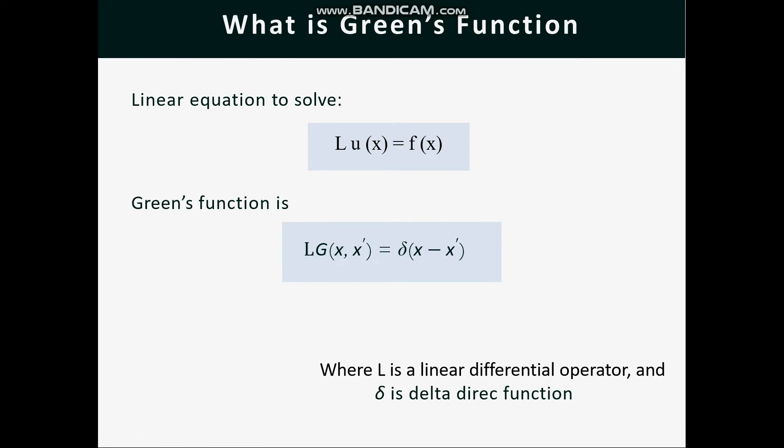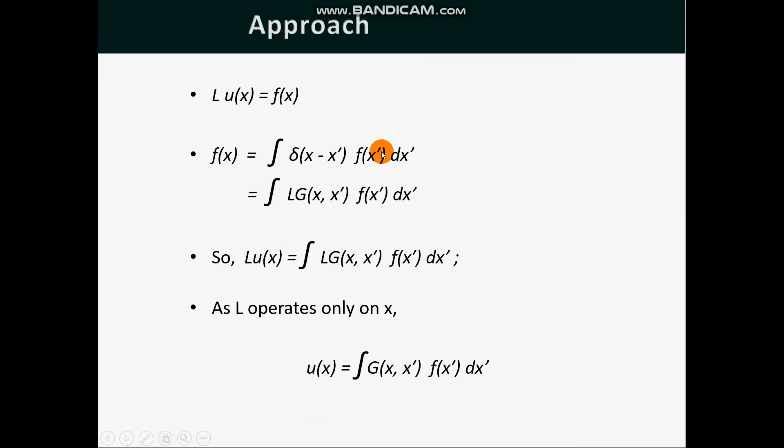A Green's Function G(x,x') of a linear differential operator L is equal to Lx acting on distributions over a subset of the Euclidean space at a point x' is any solution of L G(x,x') = δ(x - x'), where δ is the Dirac delta function. This property of a Green's Function can be exploited to solve differential equations of the form L u(x) = f(x).